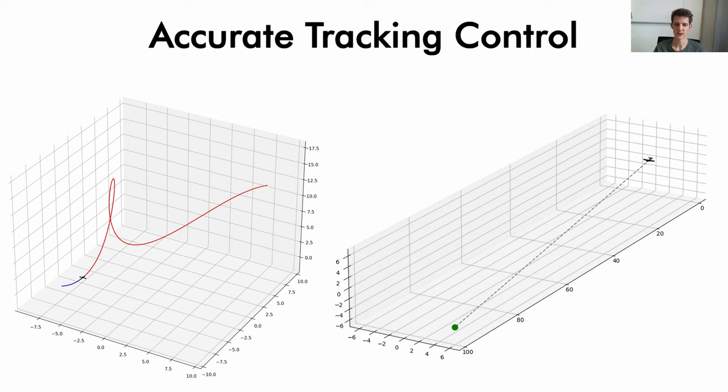When training a quadrotor on a fixed set of polynomial trajectories, we achieve learning a policy that generalizes to random test trajectories with low tracking errors, and achieve reliably guiding a fixed wing to a target point as well.